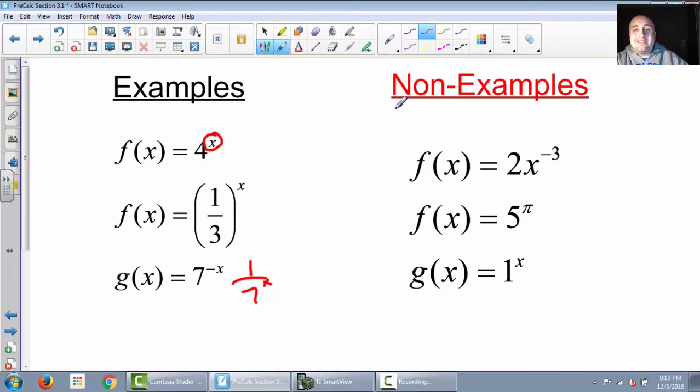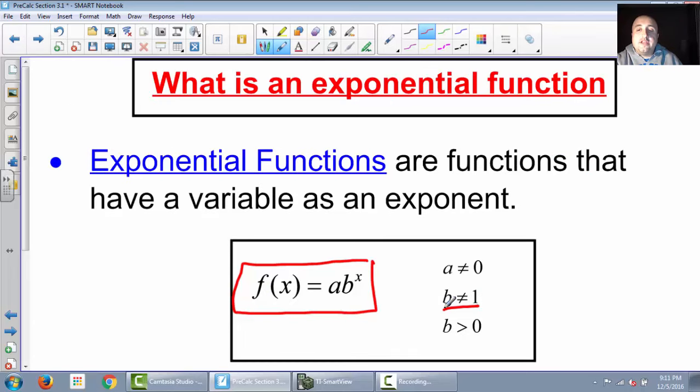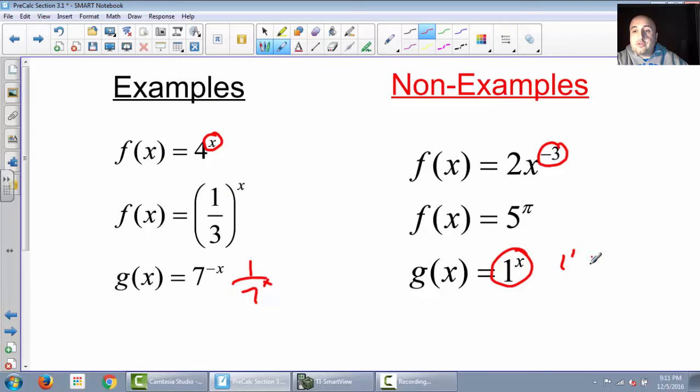Some non-examples, not exponential functions. Remember, to be exponential, the variable must be an exponent. This one's not. This one doesn't have any variables: 5 raised to pi. Pi is just a number. This one has no variables as any exponents. And then this one looks like it should be. However, on a restriction, remember, b cannot equal 1. If b is 1, then every number you plug in, 1 to the first, 1 squared, 1 to the third, 1 to the fourth, all of those are going to equal 1. So that wouldn't help us. That is a non-exponential function.